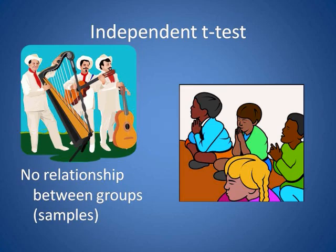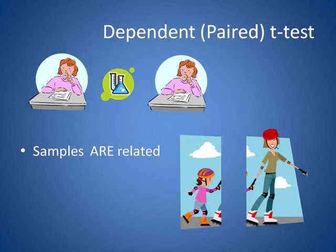A dependent or paired t-test is used when there's some relationship between the two groups. A frequently seen model is pre- and post-test scores — there's only one sample of people, but there are two different groups of scores. Each individual's pre- and post-test scores are paired up, then the data for the entire group is analyzed. A second example is the weight of mothers versus the weight of daughters, which could be used in analyzing family weight trends. Each mother and daughter's data is paired up, then the data for the entire group is analyzed.